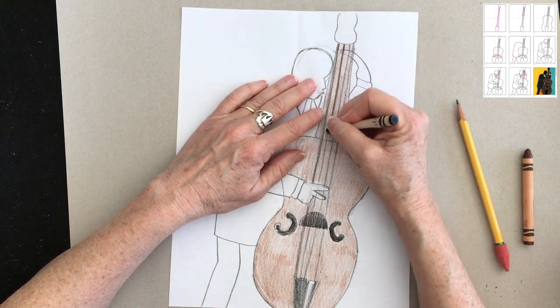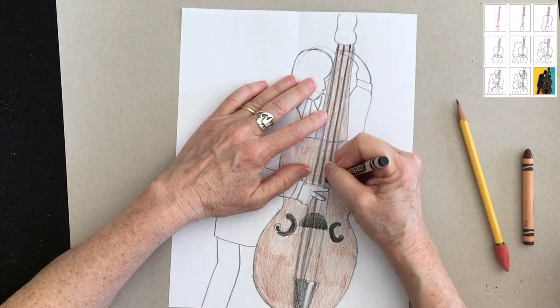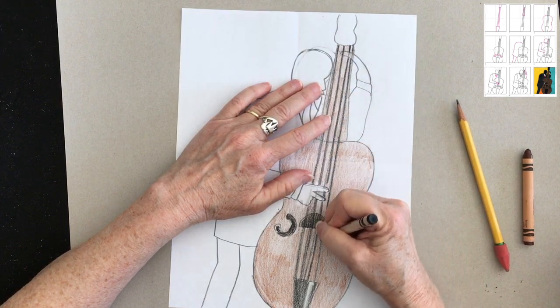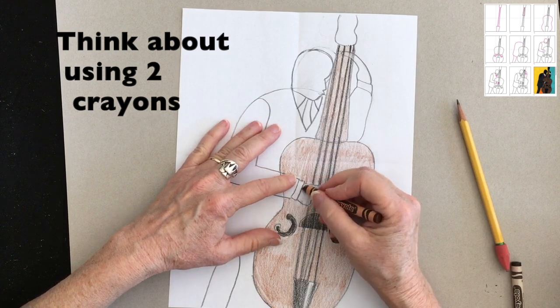I'm going to darken in my strings. And just like before, I'm going to have my whole arm on the table as it pulls down. It helps me keep my strings kind of, sort of, straight. I kind of like it when they're a little bit wobbly.